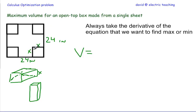So we're going to have 24 minus 2X. Let me correct that real quick, so we're going to have a 24 minus 2X base squared.